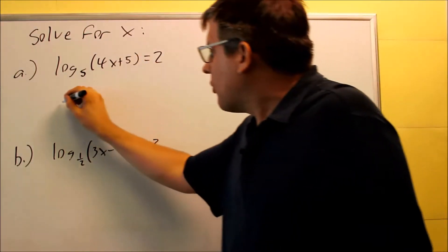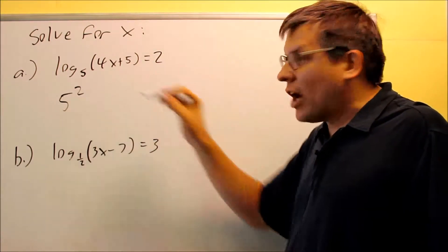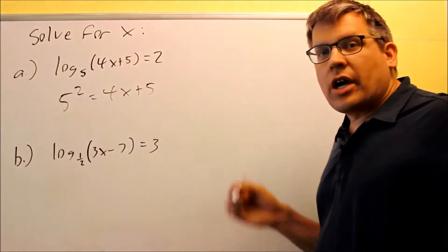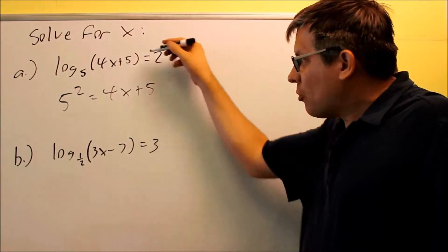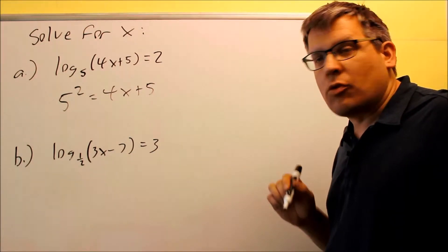So how this would work is you have a 5, that's raised to the number after the equal sign, 5 squared, that's going to equal 4x plus 5. So now I want to solve that for x. We have no more logs, we turned it into an exponent, so you're just going to solve it like normal equations you've done before.